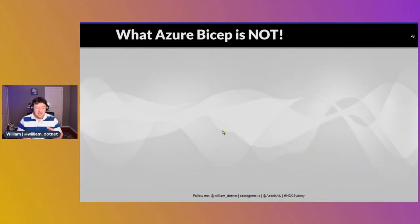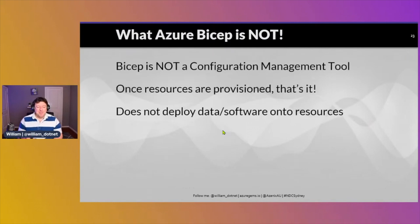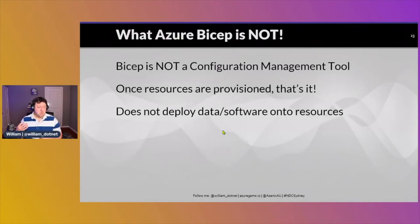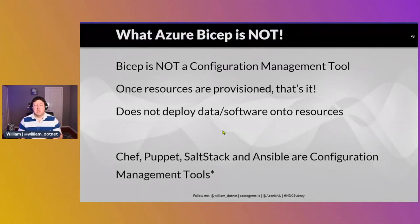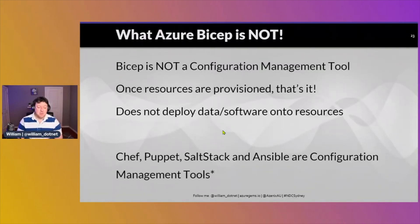What does Azure Bicep not do? It's not a full configuration management tool — it's just responsible for provisioning resources in Azure. If we spin up a VM, we don't get to say what software to install or what policies to apply. There are other tools for that — things like Chef and Puppet are full-fledged configuration management tools, and some even do cloud infrastructure provisioning. Bicep is essentially a much nicer ARM template tool, but the best tool for the job is usually the one you know best.